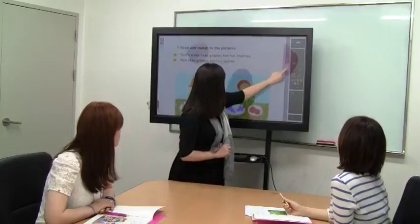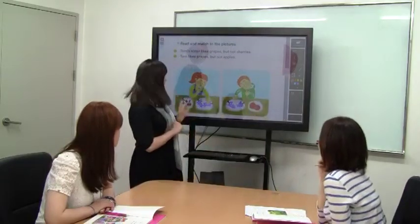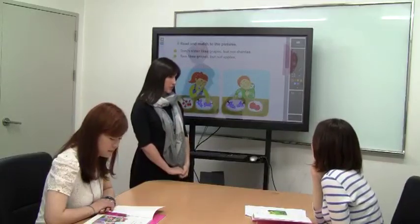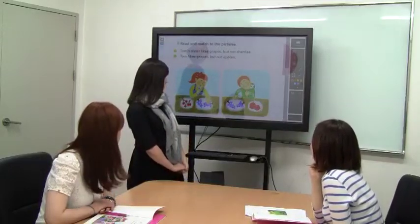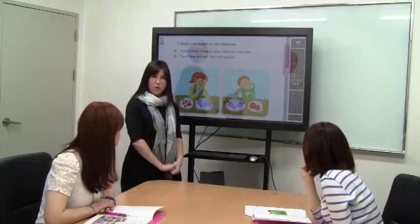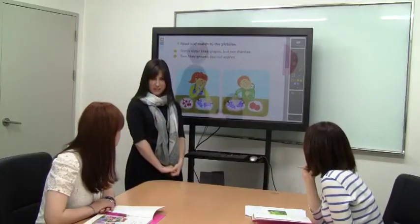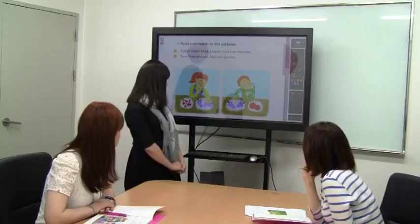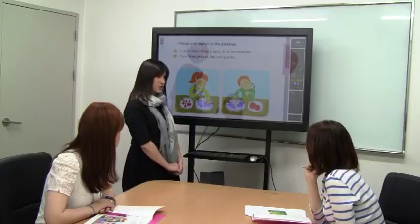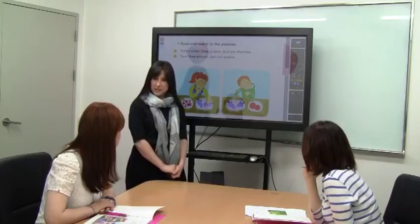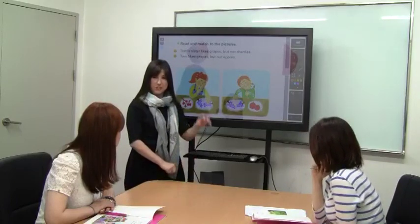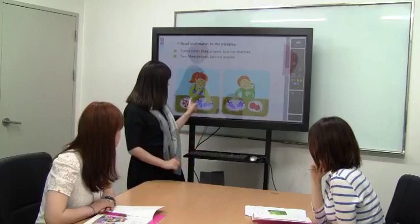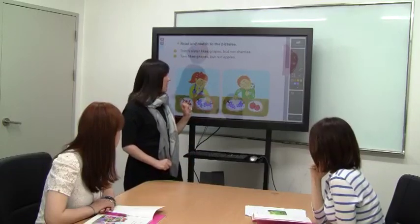Let's look at our pictures here. Vivian, in this picture, do you see a boy or a girl? A girl. Very good. And Julie, what is she eating? Grapes. She's eating grapes. What's the other fruit, Vivian? Cherries. Julie, do you think that the girl likes cherries or grapes? Grapes. Very good, because she's eating them.